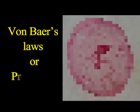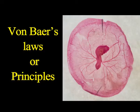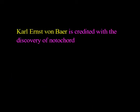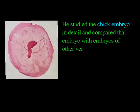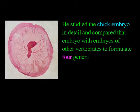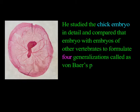Hello friends, today we are going to discuss von Baer's laws or principles. Karl Ernst von Baer is credited with the discovery of notochord and the mammalian egg. He studied the chick embryo in detail and compared it with embryos of other vertebrates to formulate four generalizations called von Baer's principles or laws. These laws state that the general features of the larger group